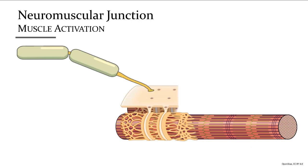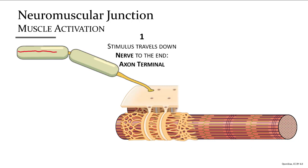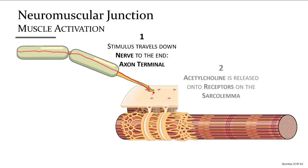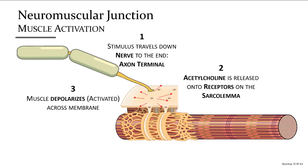The steps for activating a muscle at a neuromuscular junction begin with an electrical signal traveling down a nerve. This causes acetylcholine to be released and bind to the receptors on the sarcolemma, which depolarizes or activates the muscle cell membrane — making it more positive and thus activating it.